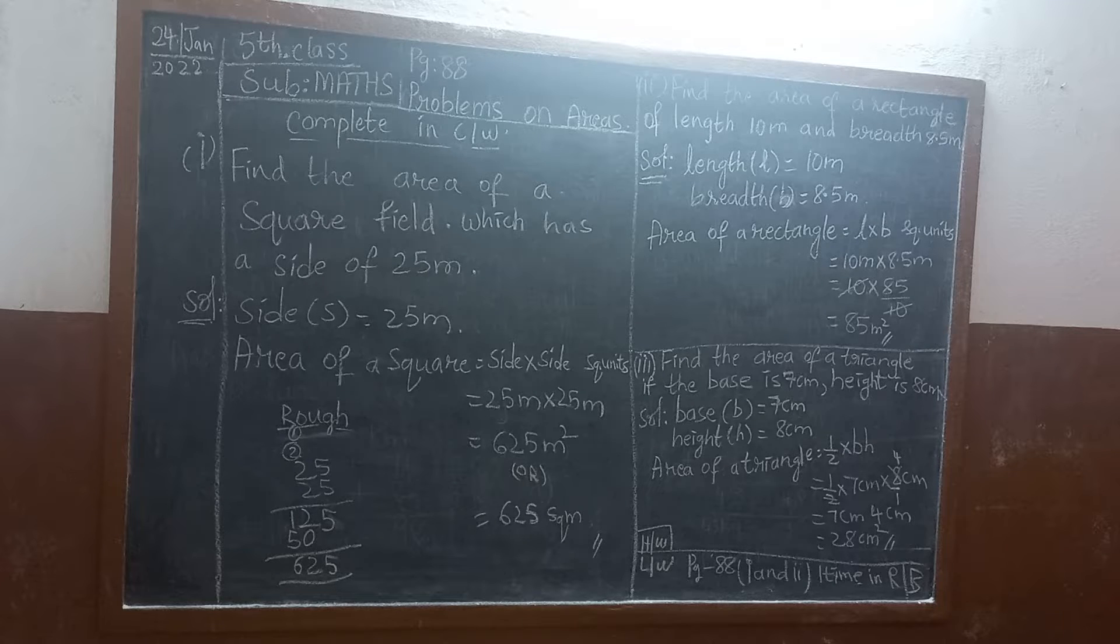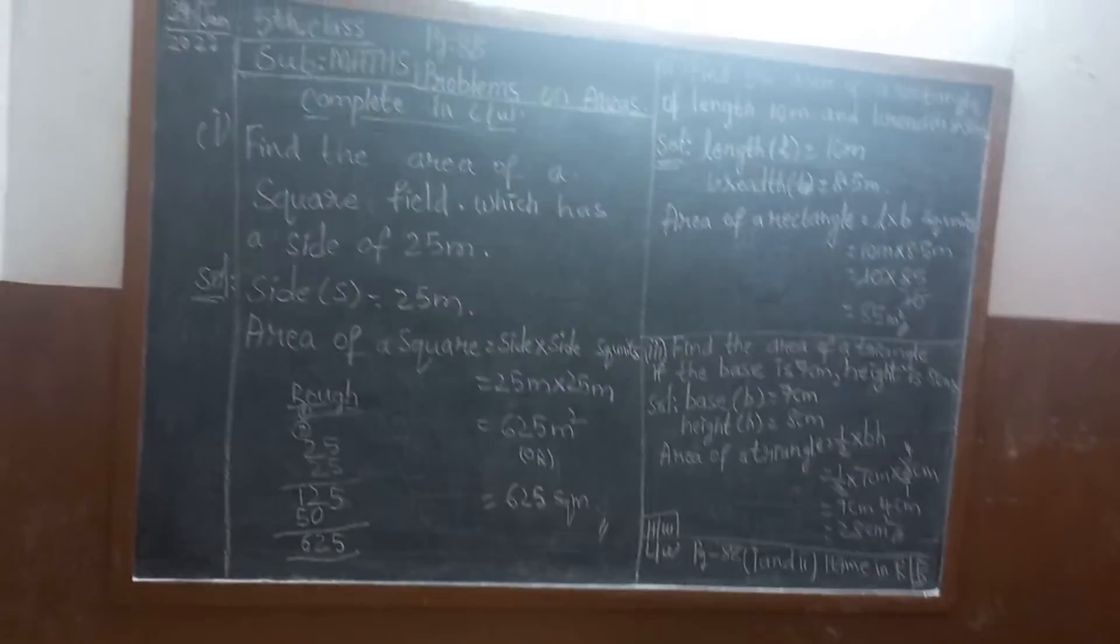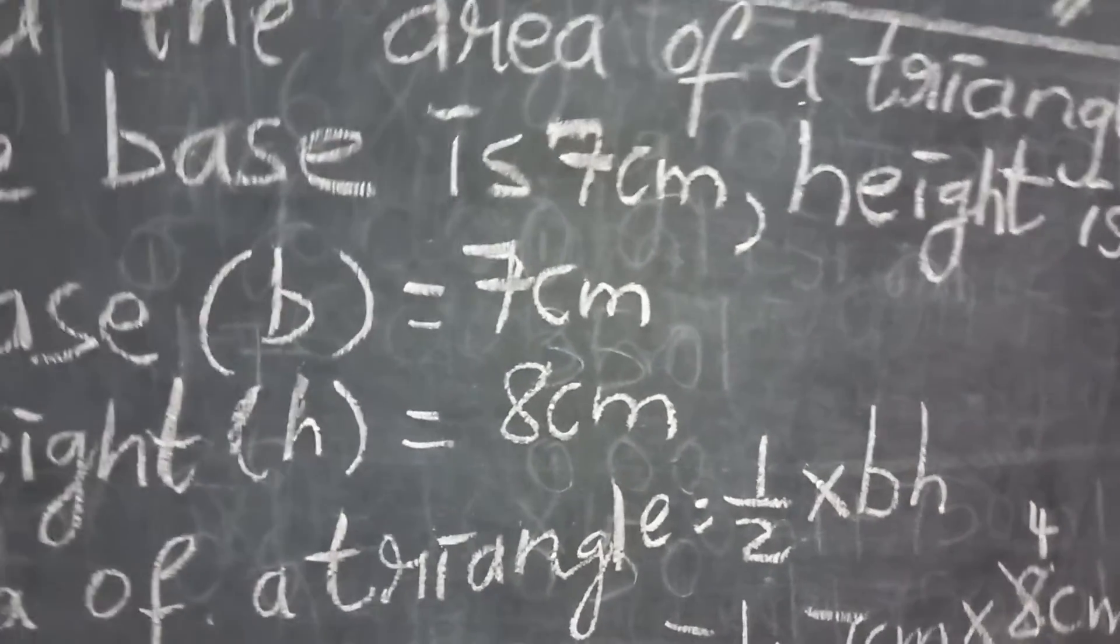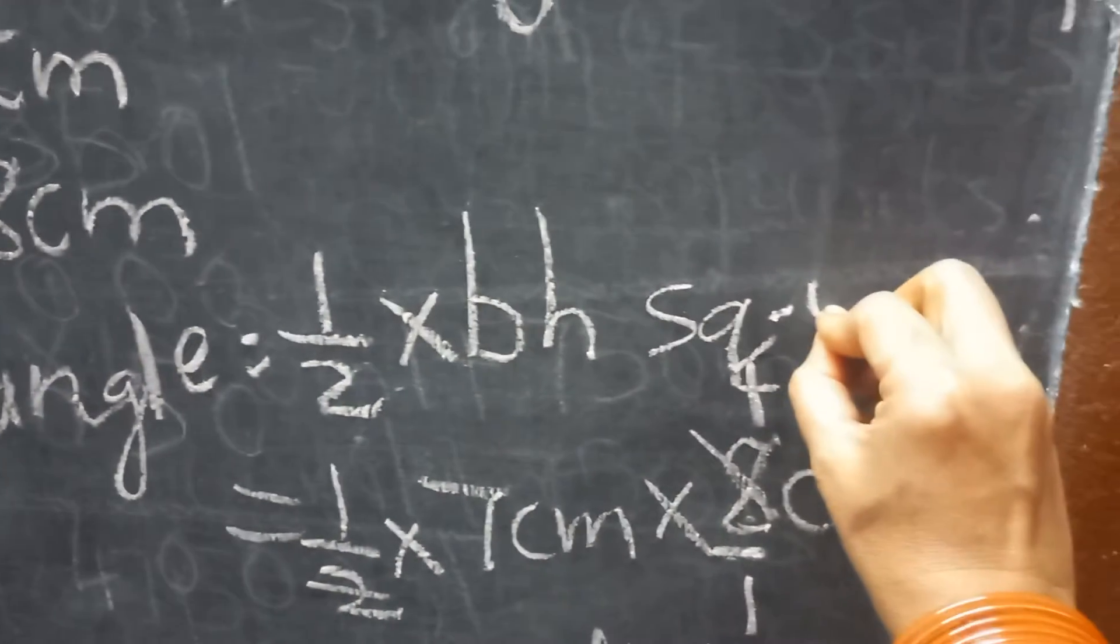Problems on areas, we have generally we will use 3 geometrical figures. What are they? Square, rectangle, triangle. Now, area of the square, we have to find area of the rectangle, we have to find area of the triangle. We know the units also. What are the units we have? The formulas also we have. Area of the square formula is side into side square units. Area of the rectangle formula is L into B square units. Area of the triangle formula is half into base into height square units.